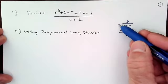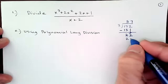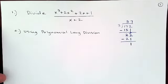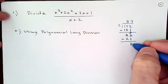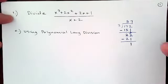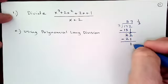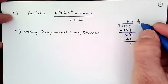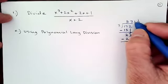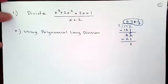We repeat the process: 3 goes into 22 seven times. 7 times 3 gives me 21. We subtract, leaving a remainder of 1. In grade school we'd say it's 57 remainder 1. Then you realize the answer is 57 and one-third — the remainder divided by your divisor. When we do it with polynomials, 57 and one-third is the same thing as 57 plus one-third. Keep that in mind — this is how we'll express our answer with polynomials.